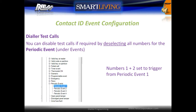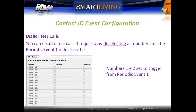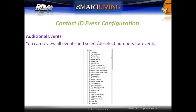In the events tree, locate Periodic Events and then select Event 1. Deselect telephone numbers 1 and 2 from the periodic event. Review additional events and then deselect or select numbers for those events.